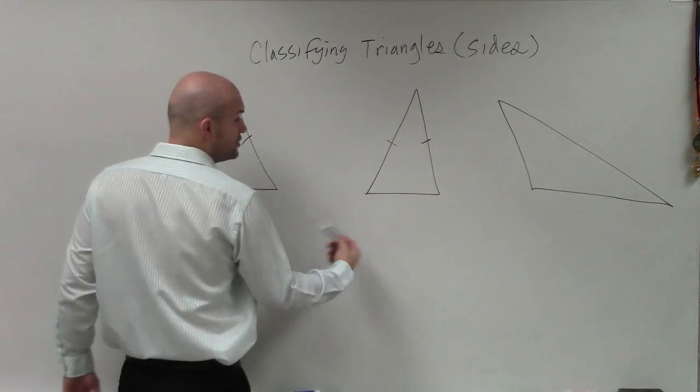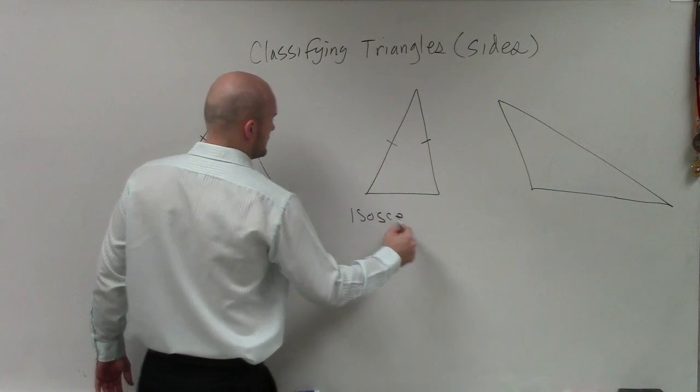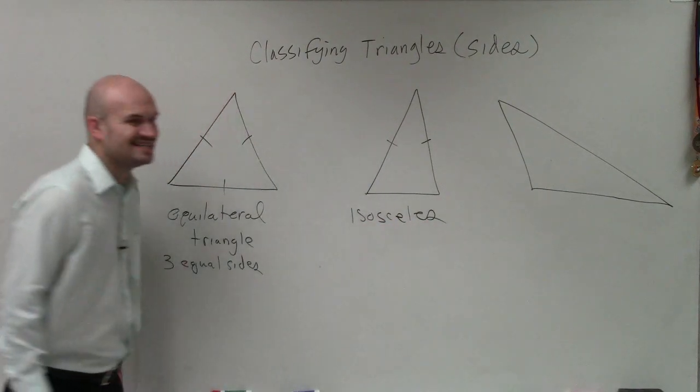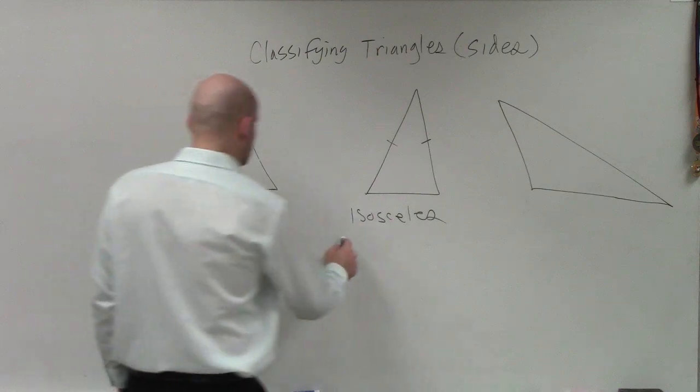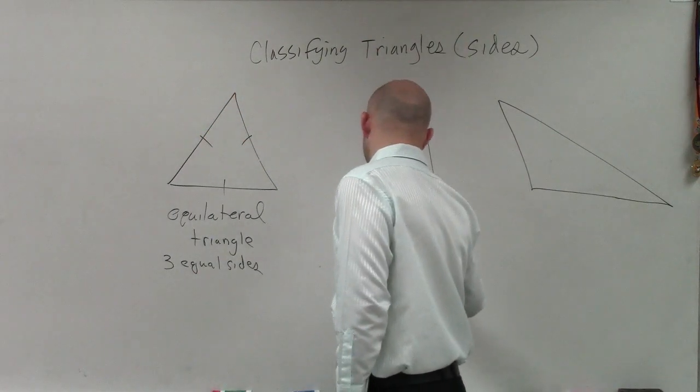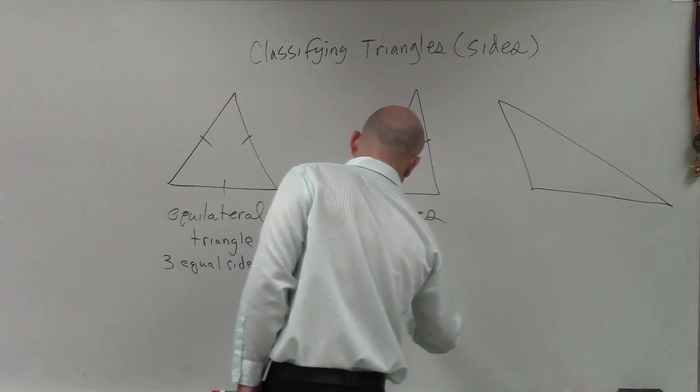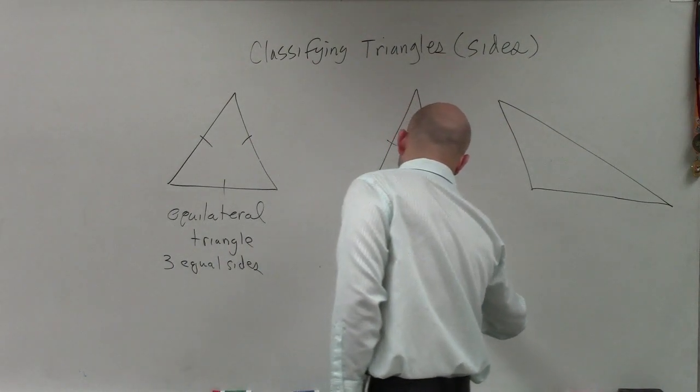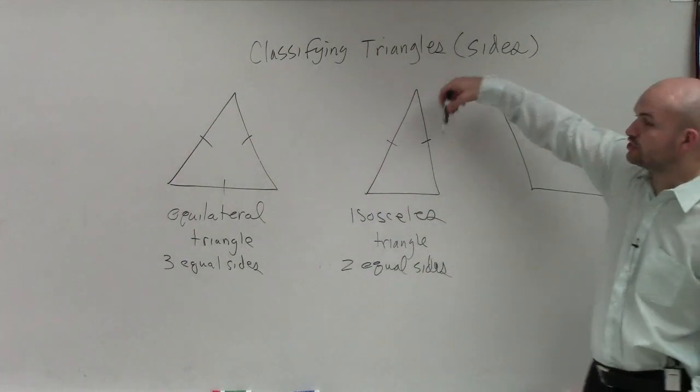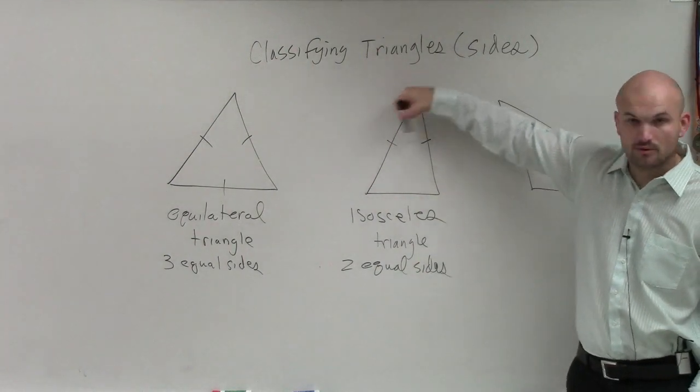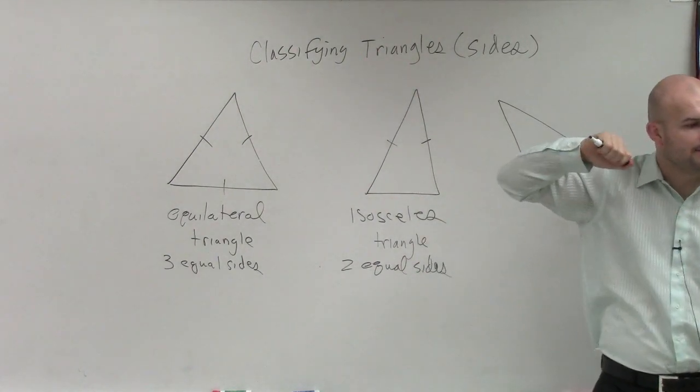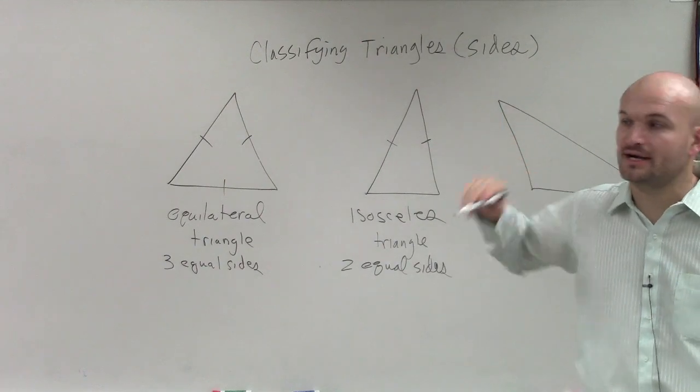If we have two equal sides, we call that an isosceles triangle. Remember, we can show that they're equal to each other with those little tick marks. So if we have two equal sides, we call that isosceles.